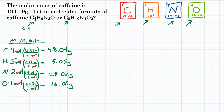To get the molar mass, we add all of these together: 48.04 plus 5.05 plus 28.02 plus 16 gives us a molar mass of 97.11 grams. That is the molar mass of our empirical formula, C4H5N2O.